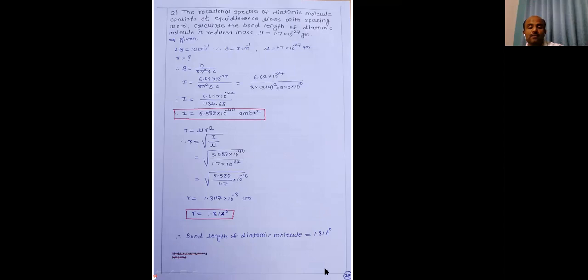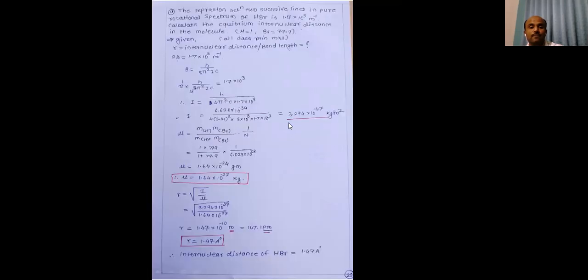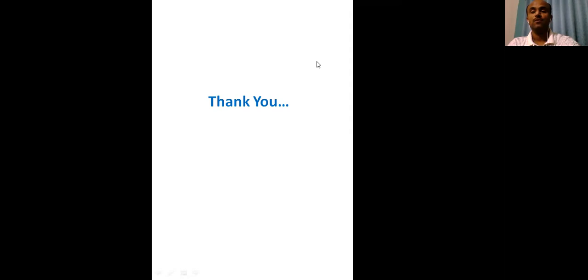Additional similar problems involve calculating reduced mass and moment of inertia — these are practice problems of the same type. This covers everything about the equation of the rigid diatomic molecule, its derivation, and problems based on rigid diatomic molecules. Thank you.